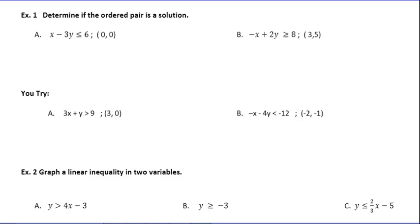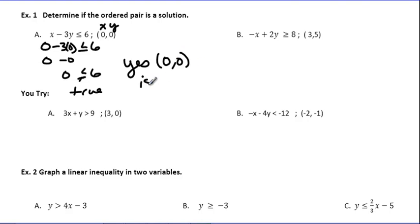First off, determining if an ordered pair is a solution. This is something we've done before with equations, now we're doing it with inequalities. It's done exactly the same way. We know each ordered pair is labeled with an x and a y. If we want to determine if this point is a solution, we plug it in and do our calculation. So I'm going to say 0 minus 3 times 0 is less than or equal to 6. Of course, anything times 0 is 0, so 0 less than or equal to 6, this is true. So we would say yes, (0,0) is a solution.